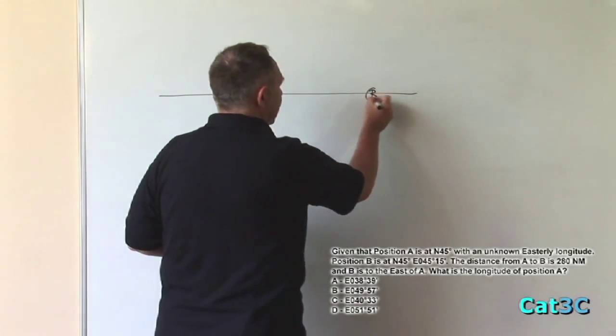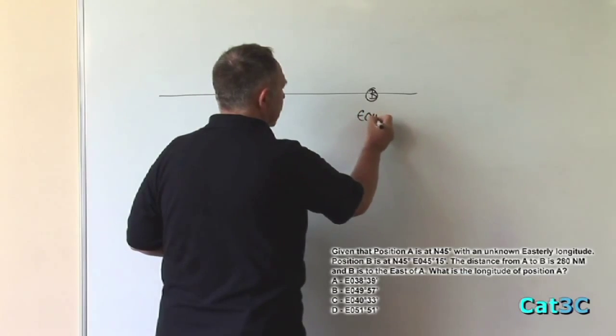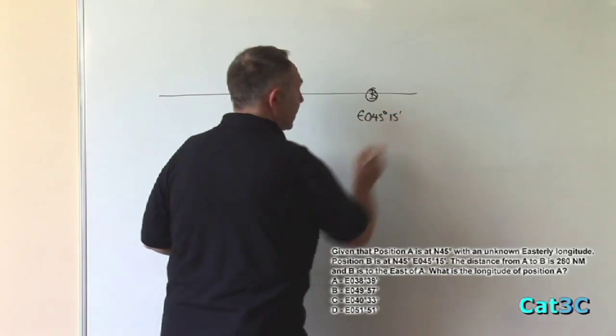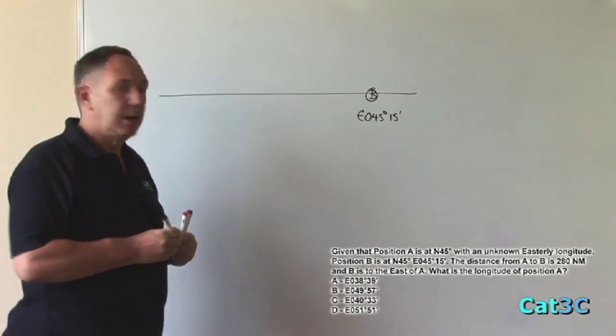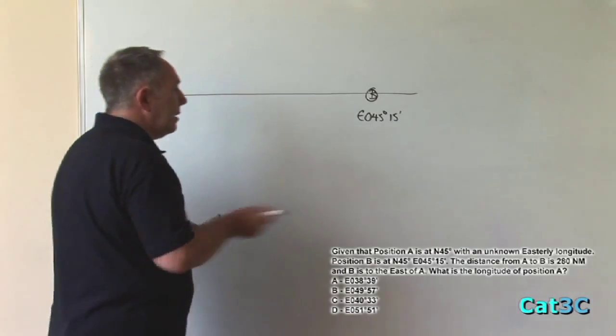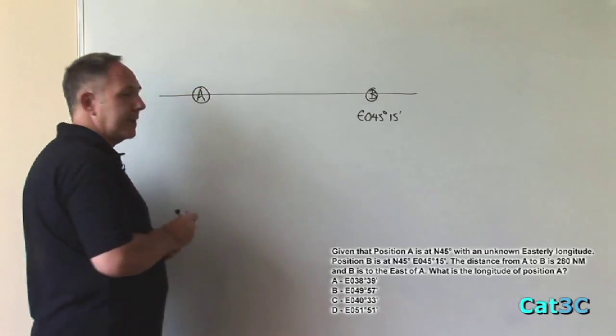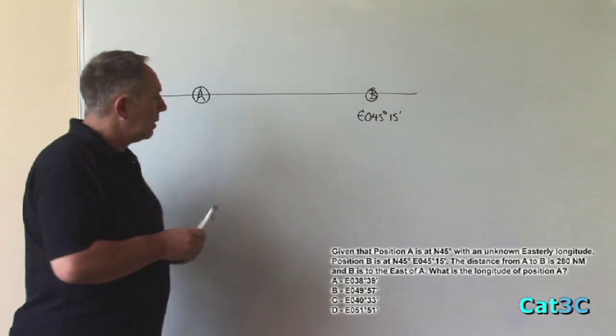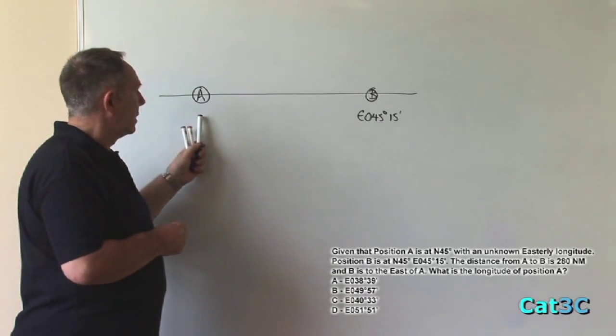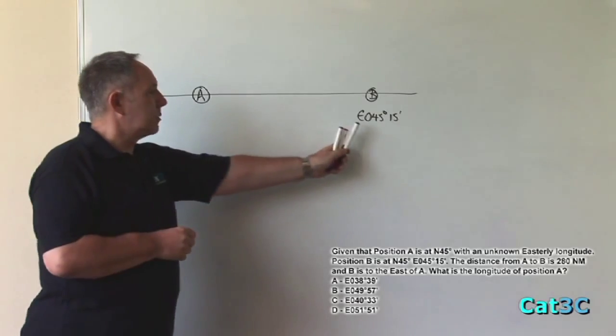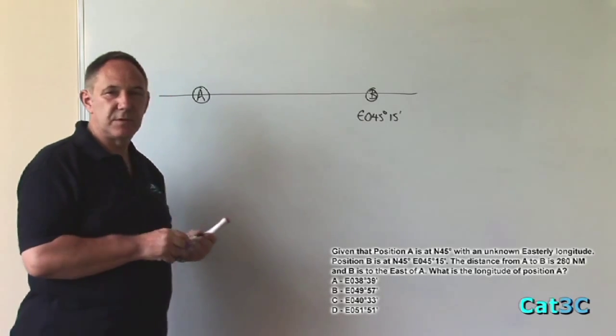So I'm going to put B there at east 45 degrees and 15 minutes. If B is to the east of A, then it stands to reason that A is to the west of B. Obviously, the longitude of A is going to be less than east 45 degrees 15 minutes.